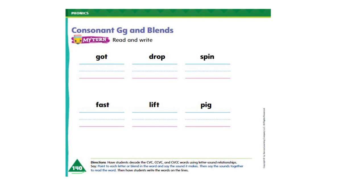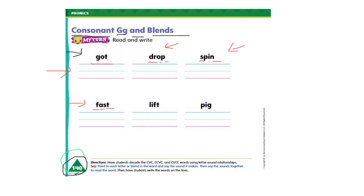Okay everybody, on page number 140 in My View K2 books, we have consonant G and blends. We have to read and write the words. Let's read the first one together: Got. Now let's write it on the lines. Drop. Spin. Fast. Lift. Pig. Don't forget to write the words on the lines. Take a picture of your work and send it to me please.